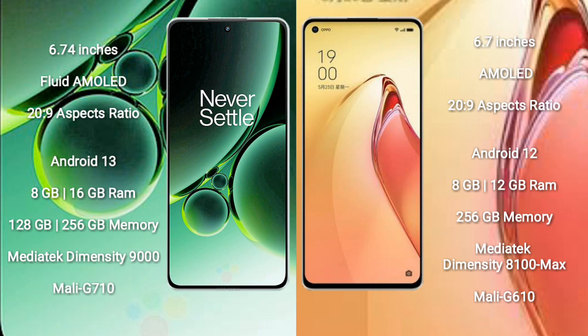OnePlus Nord 3 comes with 8GB or 16GB RAM and 128GB or 256GB internal storage, powered by a MediaTek Dimensity 9000 processor with Mali-G710 GPU.